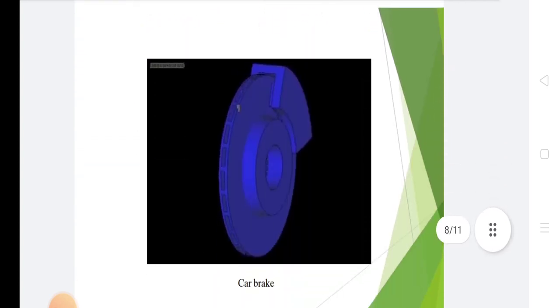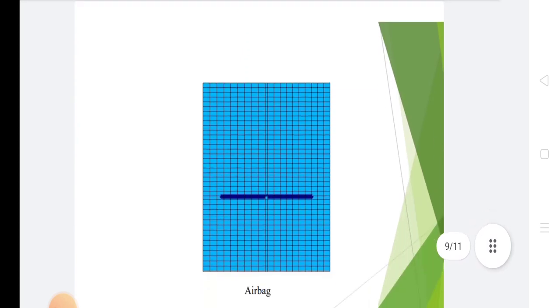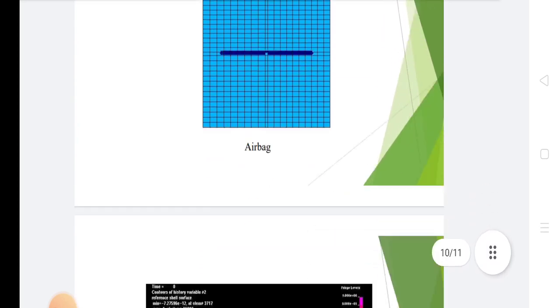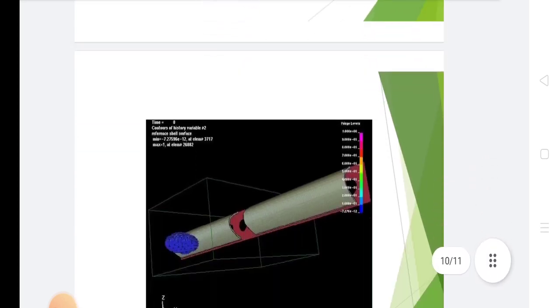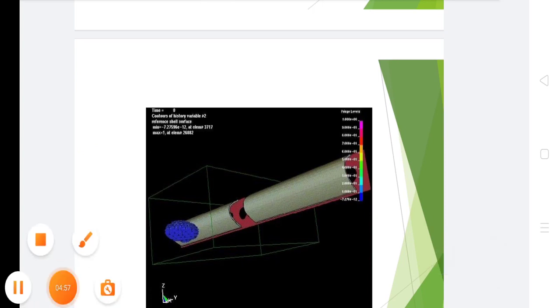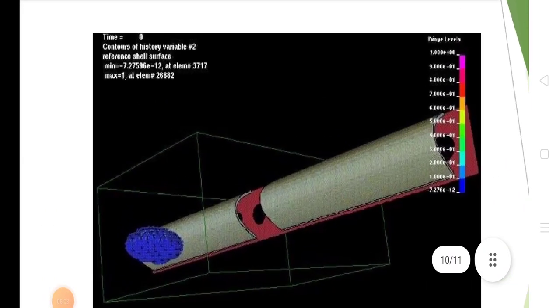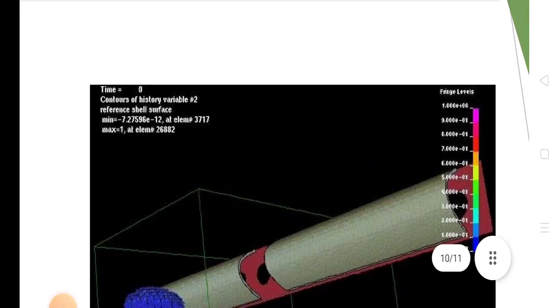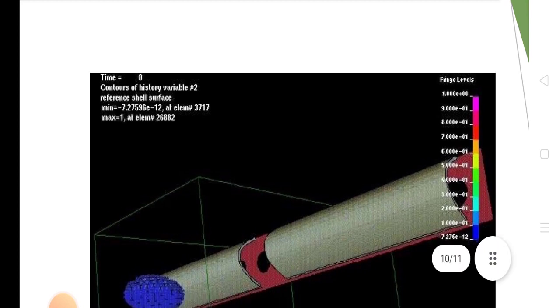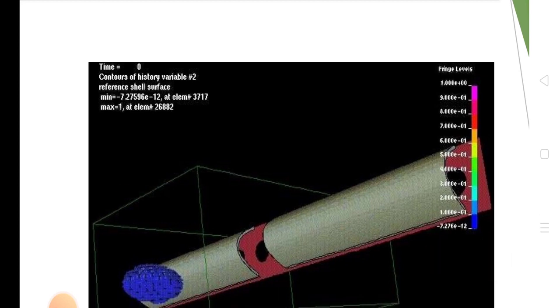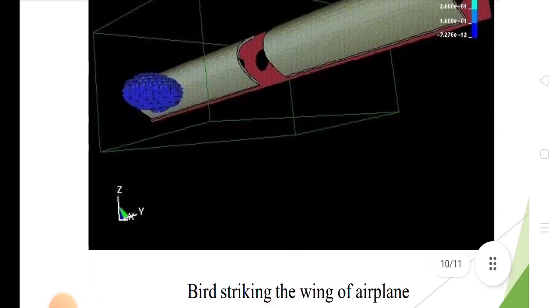This is the car brake system. This is the airbag. This is the analysis of airbag using ANSYS software. The mesh control shows which variable, shell surface, and minimum and maximum conditions are given. These are the levels given.